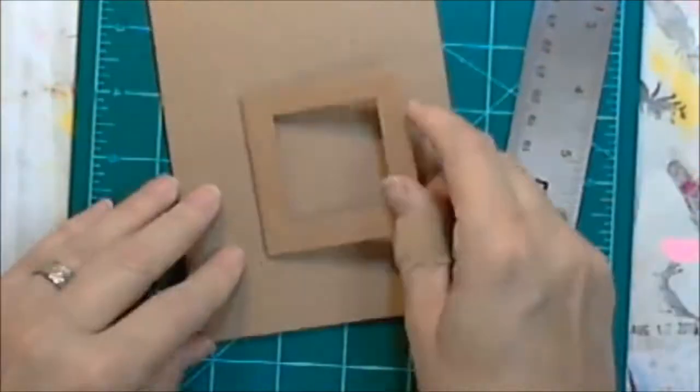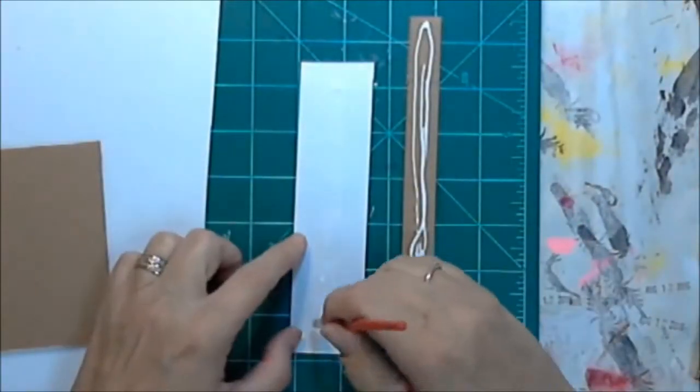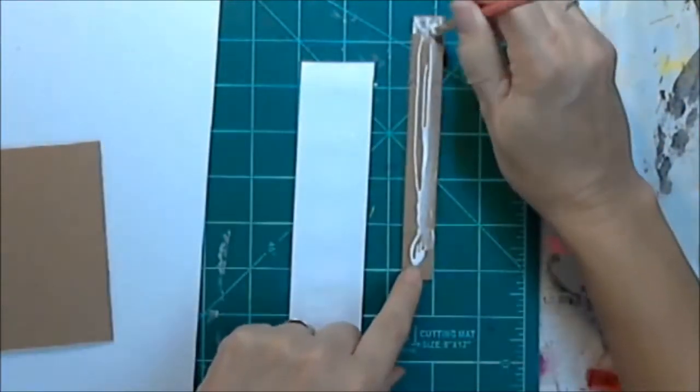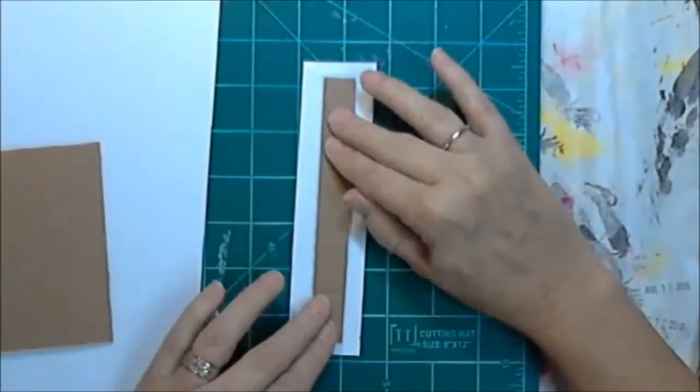And it didn't cut all the way through my corrugated board, so I'm trimming it out with the craft knife. Be sure to keep putting those lids back on your craft knives. You don't want to cut yourself or accidentally poke yourself when you're swiping across your desk to get the dust crumbs off.